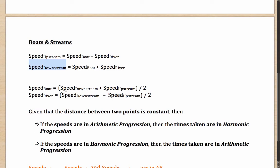...you will get the speed of the boat as downstream speed plus upstream speed divided by 2. Whereas the speed of the river will be downstream speed minus the upstream speed divided by 2. You could simply get it by adding the two equations as well as subtracting the two equations.